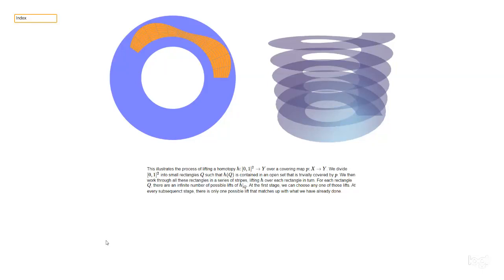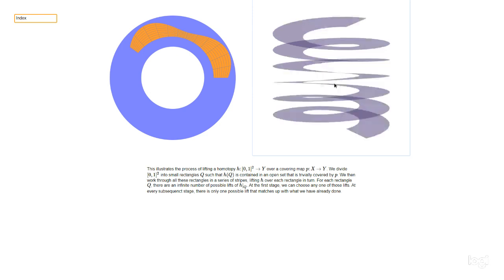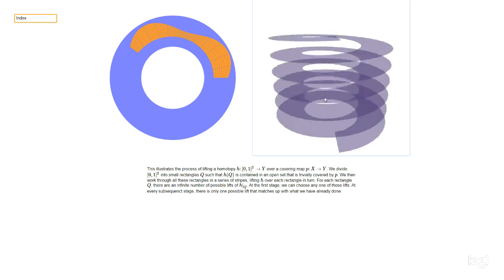In a previous video we explained the path lifting property of covering maps, using the particular example of the exponential map from a helix to an annulus. In this video we're going to explain the homotopy lifting property, which we also need for applications to calculating fundamental groups.